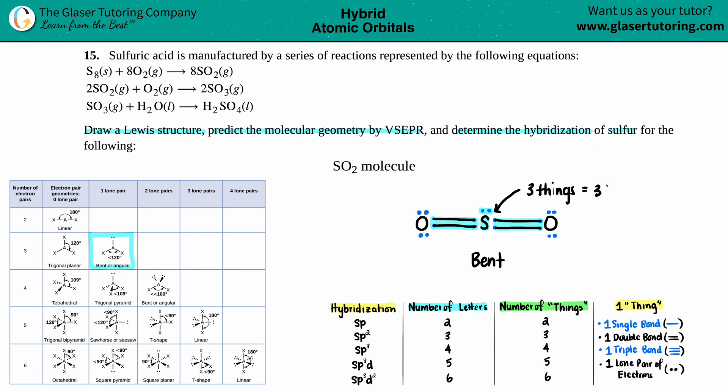So three things, three letters. So the hybridization for that sulfur is SP2, and we are done. So SP2 hybridization for sulfur, the geometry is bent and there's Lewis structure and that's it.